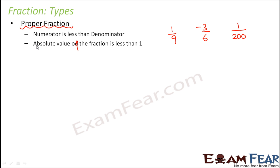What is the meaning of absolute value? Absolute value means the non-negative value — the value without considering the sign. For example, the absolute value of minus 3/6 would be 3/6, because we ignore the sign. Whether it is a positive or negative sign, the absolute value is always positive. So the absolute value of 1/9 is 1/9, and the absolute value of minus 3/6 is 3/6.